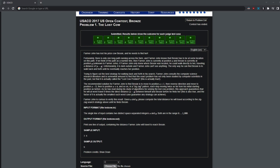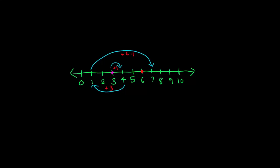Let's take a look at the number line and try to visualize the problem. As you can see, I've sketched out the number line being discussed in the problem. First, we go X plus 1 — so we go 1 unit away from the starting position, and we still haven't found Bessie.